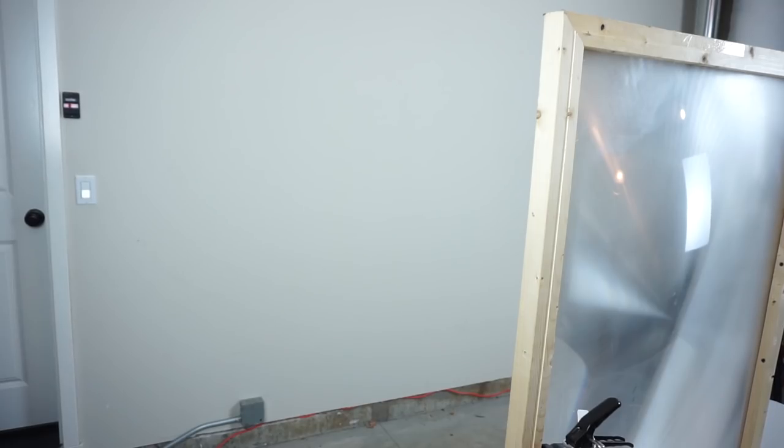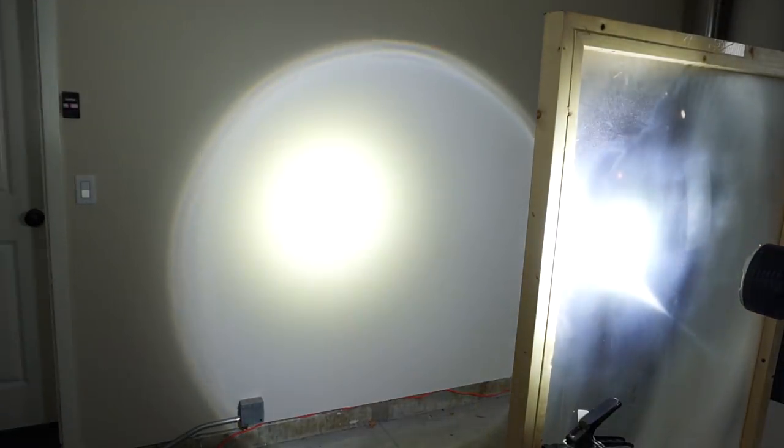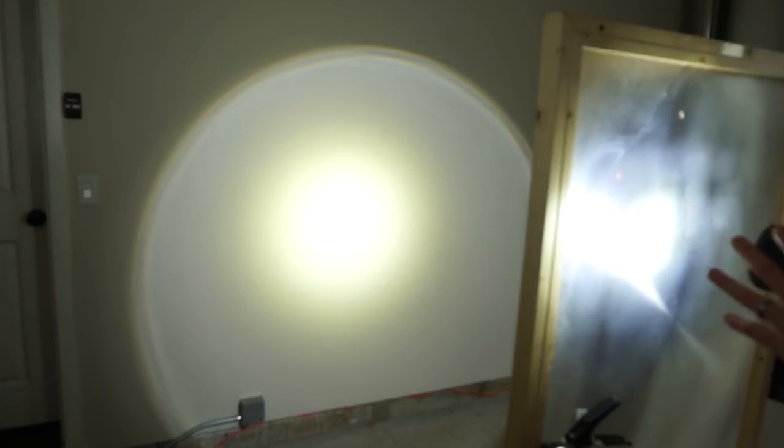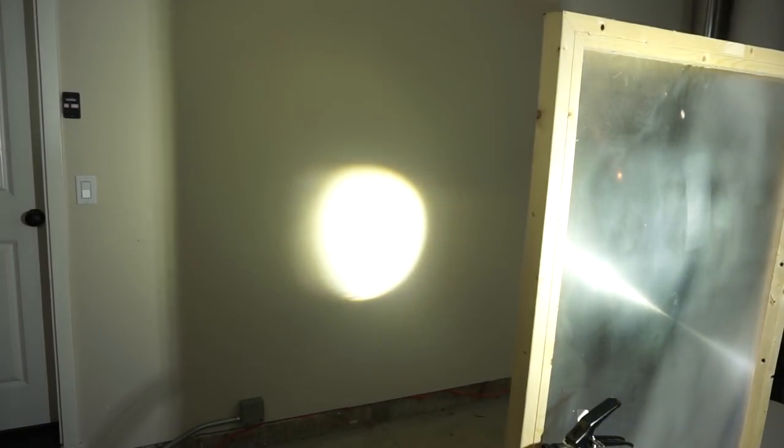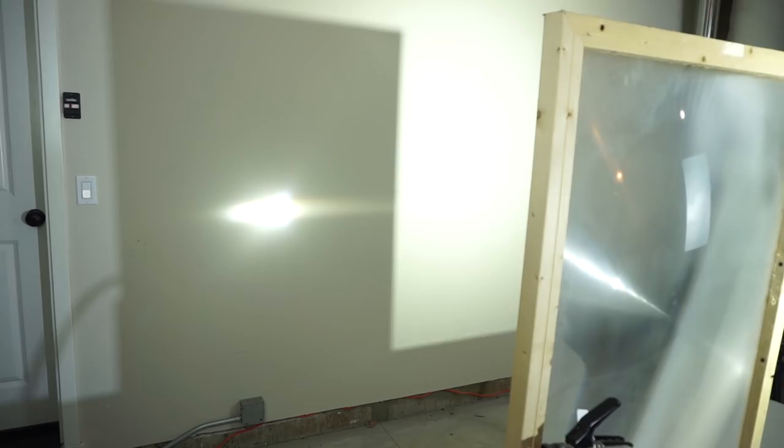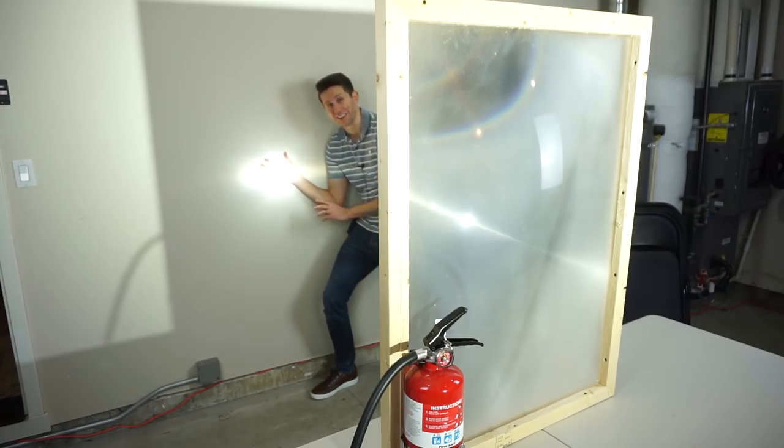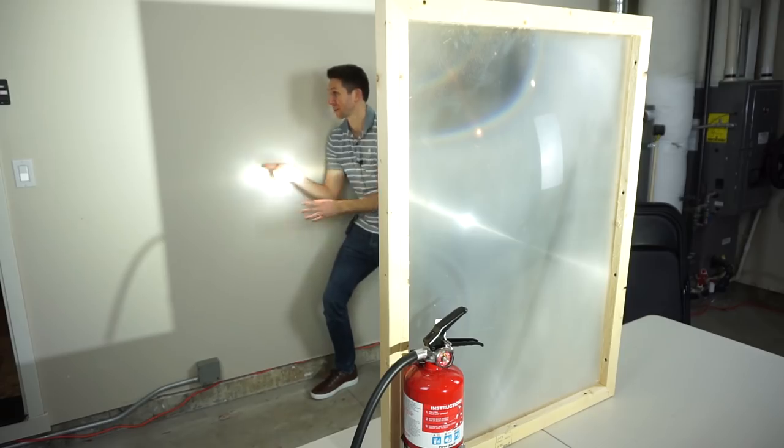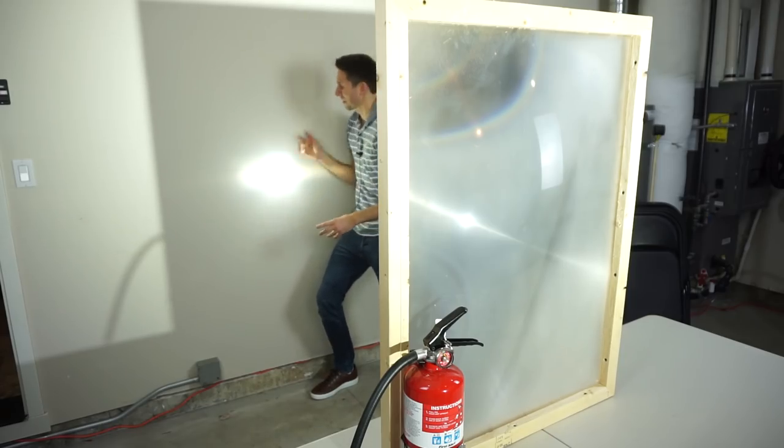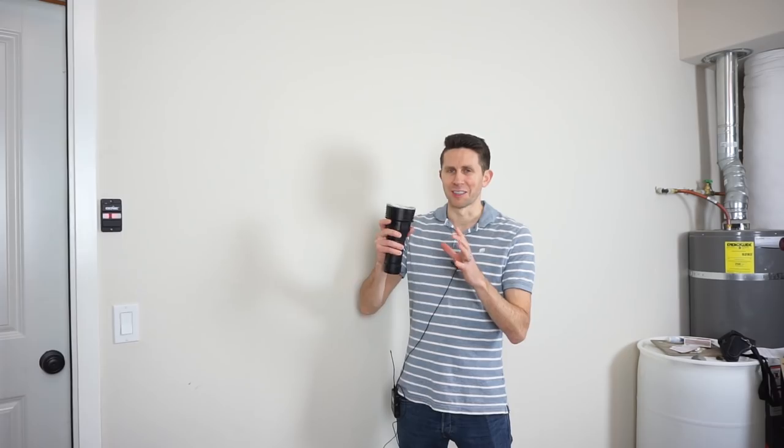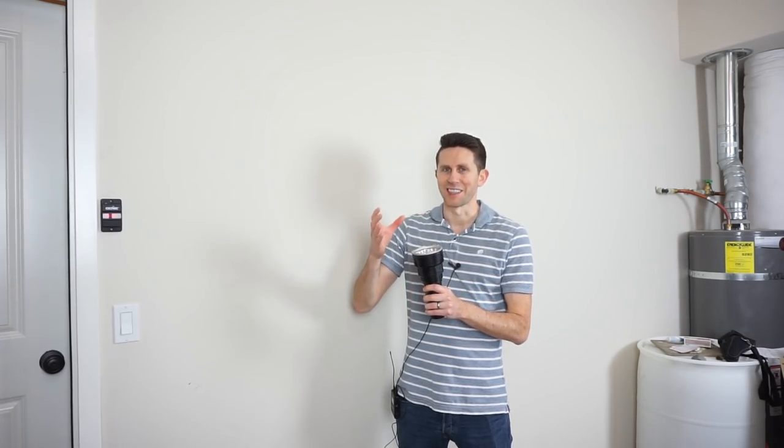So now let's see if we get any different results with the Fresnel lens here. I'll start by putting the flashlight close and we see that this doesn't help us because I just get a magnified version of the flashlight. And as I back up, it gets smaller and smaller until I get a dot there. And that dot was no smaller than the initial size of the flashlight head here. So again, this dot is not hotter than just holding my hand in front of the flashlight. In fact, it's weaker because we lost all of this light up here.